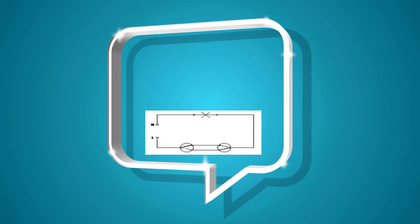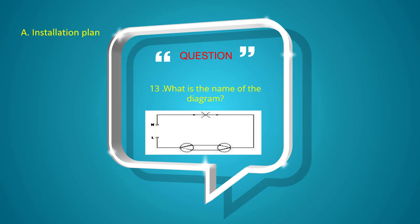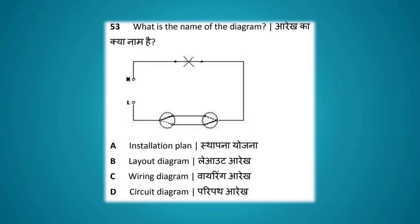What is the name of the diagram shown? Options: installation plan, layout diagram, wiring diagram, circuit diagram. The answer is circuit diagram.